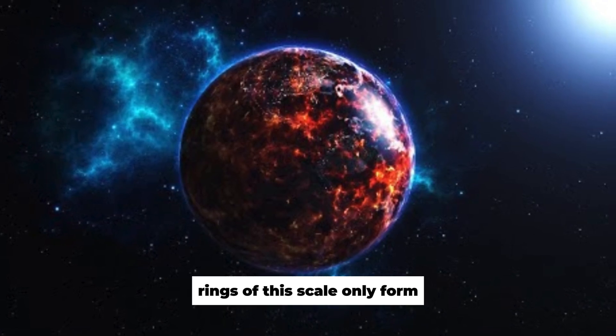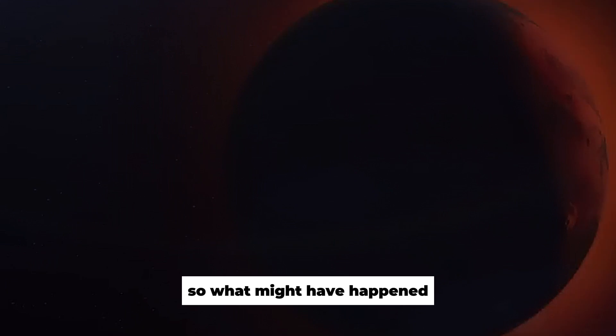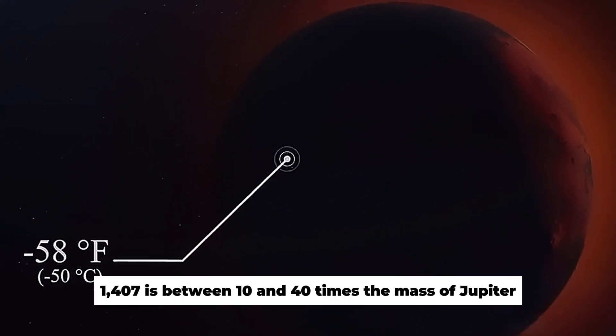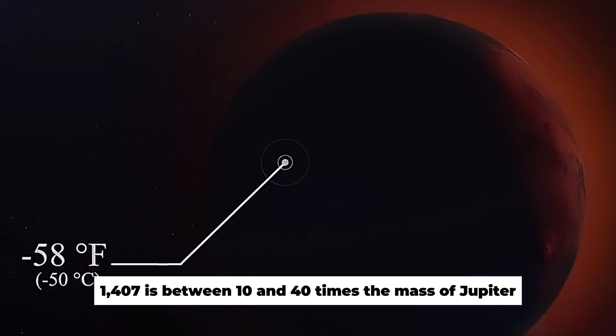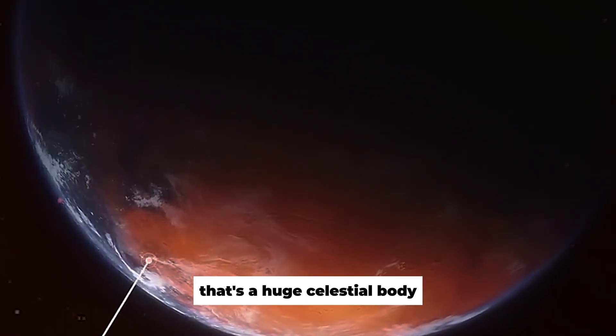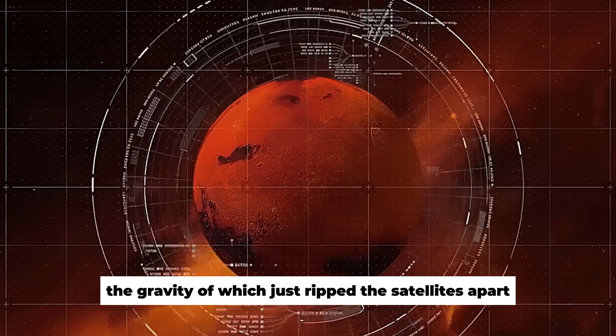Rings of this scale only form thanks to mass destruction of a planet's satellites, so what might have happened? It's likely that the mass of J-1407 is between 10 and 40 times the mass of Jupiter. That's a huge celestial body, the gravity of which just ripped the satellites apart.